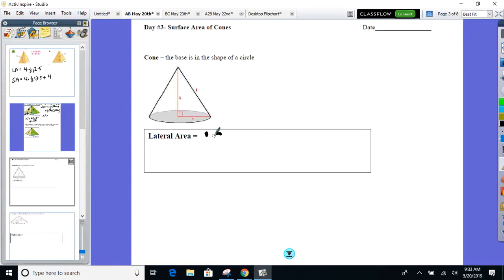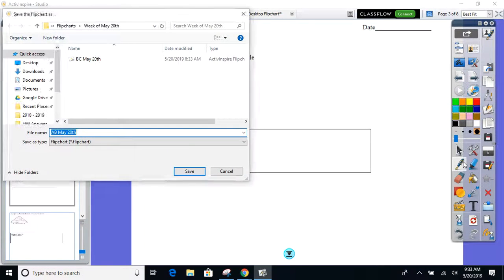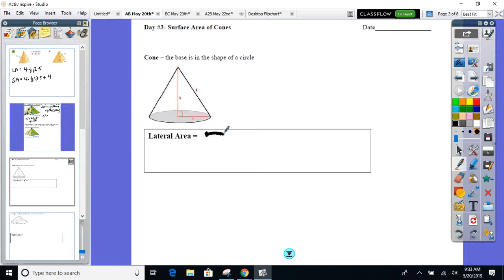Lateral area of cone. Ready? Pi. Come on. Pi R. Everyone ready for this? L. L stands for slant height already. It was kind of the same as the pyramid. Remember what we called that height right here? Slant height. So just so you know, the pi R L, the L stands for slant height.